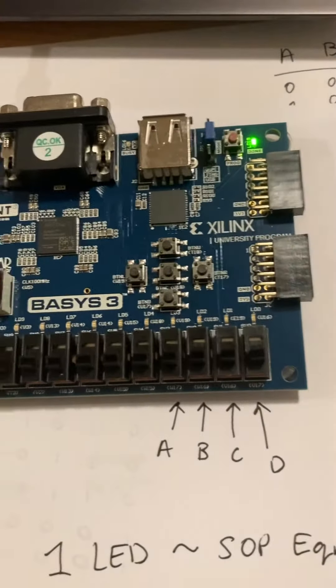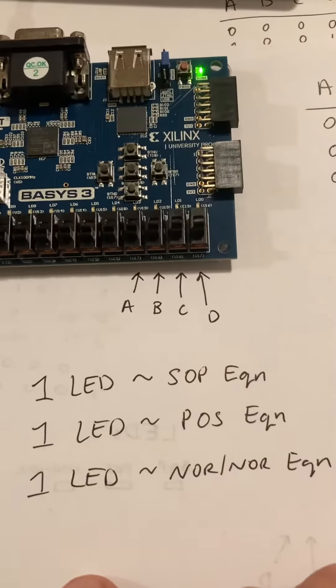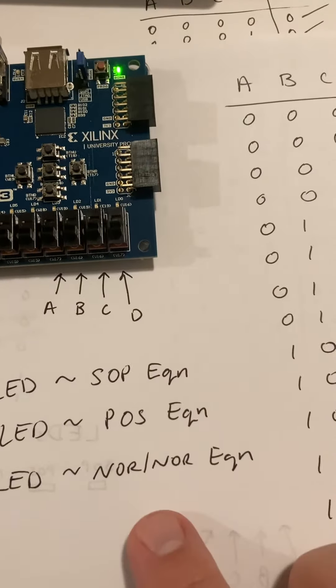We're working with our Base 3 board again. Four switches: A, B, C, and D. Three LEDs, one set up for each of the equations: SOP, POS, and then NOR NOR.